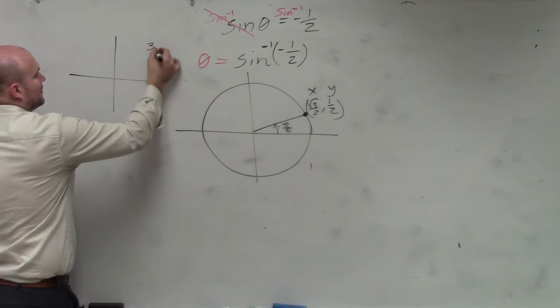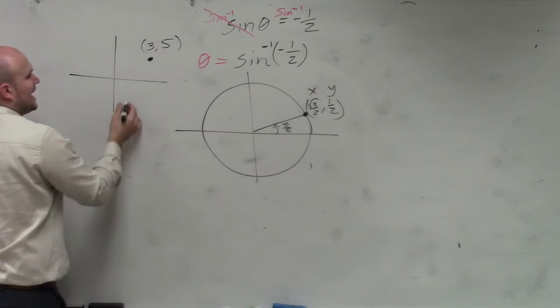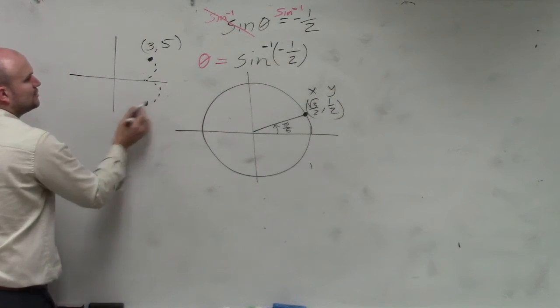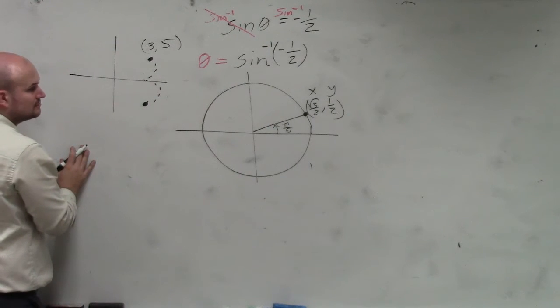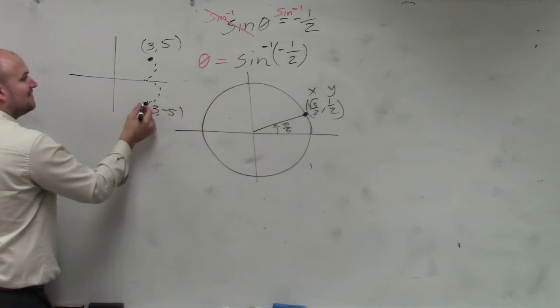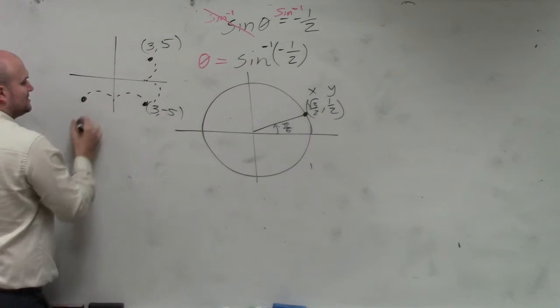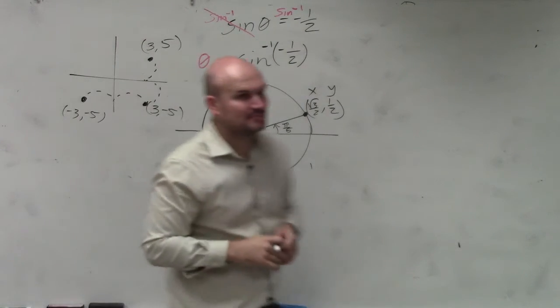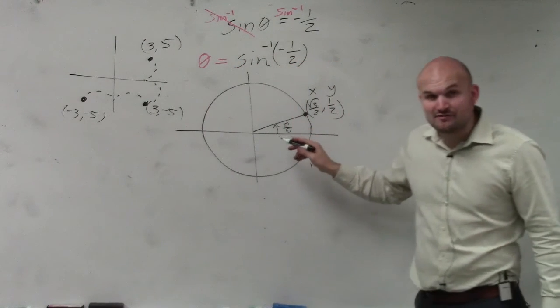If I have a point, 3 comma 5, and I reflect that point over the x-axis, what is the new coordinates of my point? 3 negative 5.